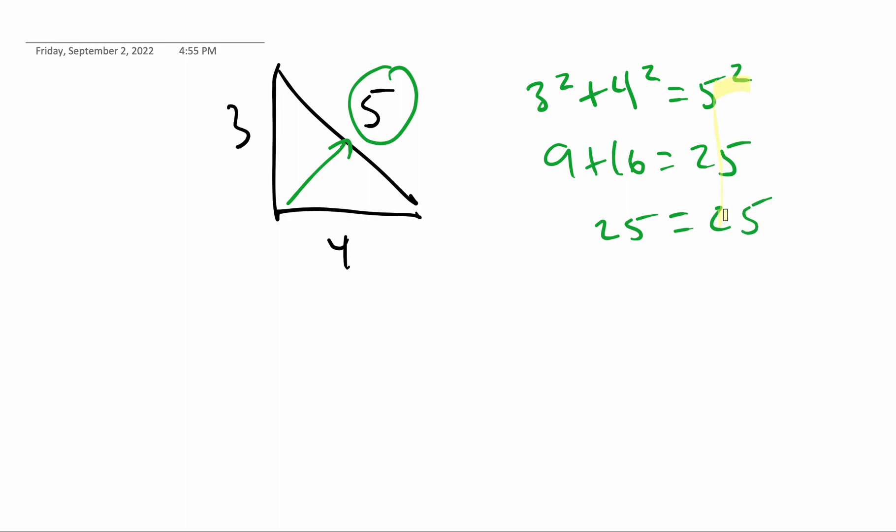So again, I focus on the c squared. And so c squared is equal to the other side. That means it's going to be a right triangle because the Pythagorean theorem works with right triangles.